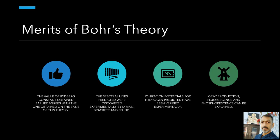The results of Bohr's theory agree very well with the experimentally observed facts as: 1. The value of Rydberg constant obtained earlier agrees with the one obtained on the basis of this theory. 2. The spectral lines predicted by this theory were discovered experimentally by Lyman, Brackett and Pfund. 3. Ionization and resonance potentials for hydrogen predicted on the basis of this theory have been verified experimentally. 4. A number of phenomena like x-ray production, fluorescence and phosphorescence can easily be explained on the basis of this theory.